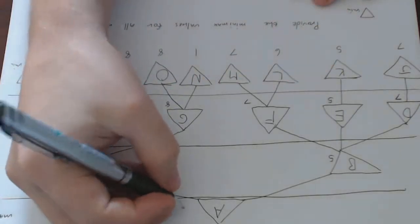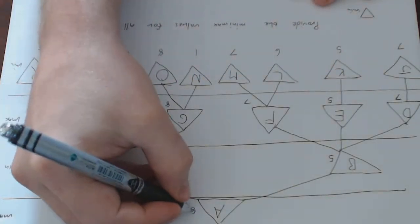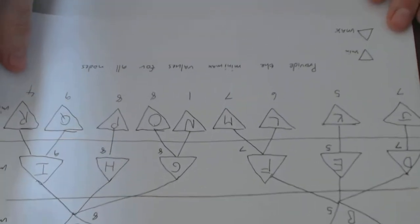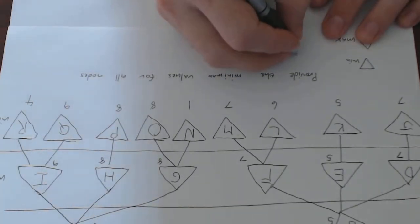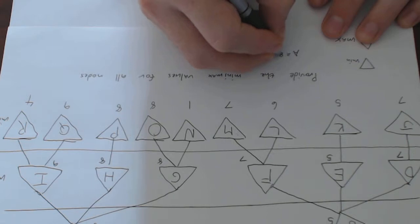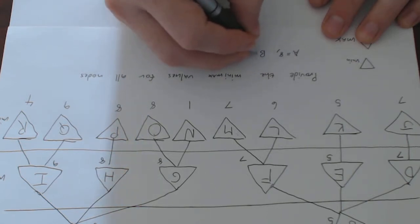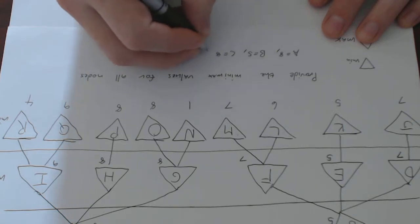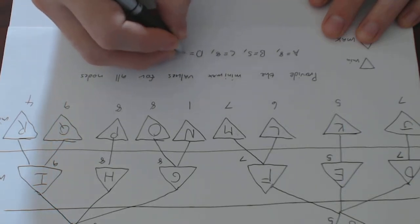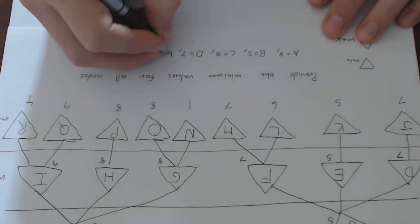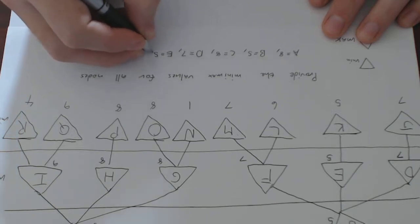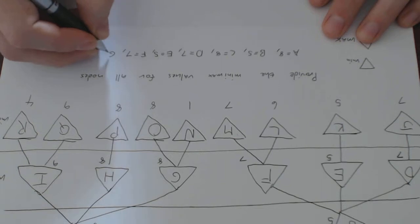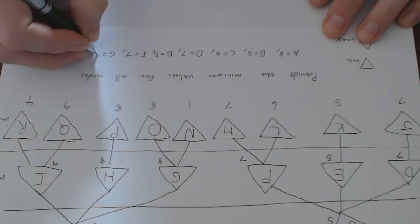The maximum value should be eight. So just to summarize: b equals five, c equals eight, d equals seven, e equals five, f equals seven, g equals eight.